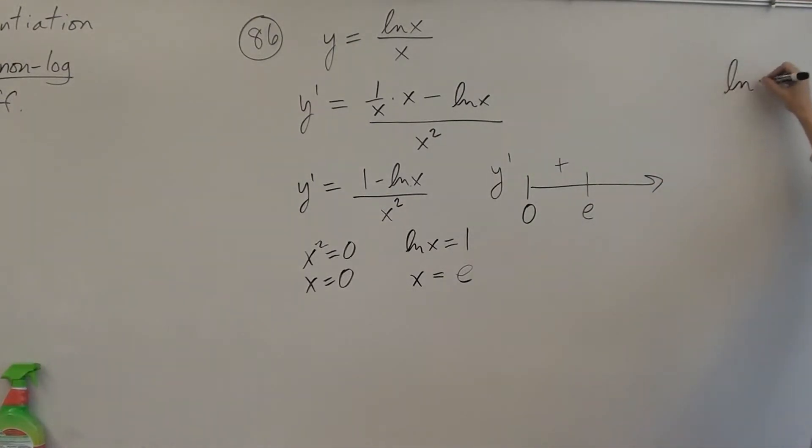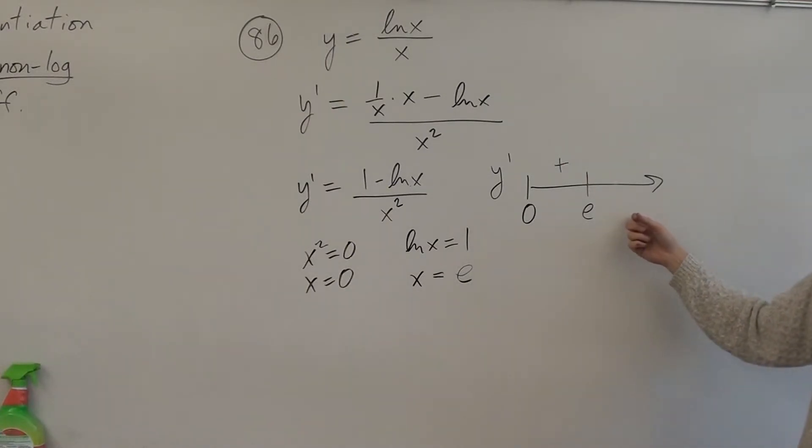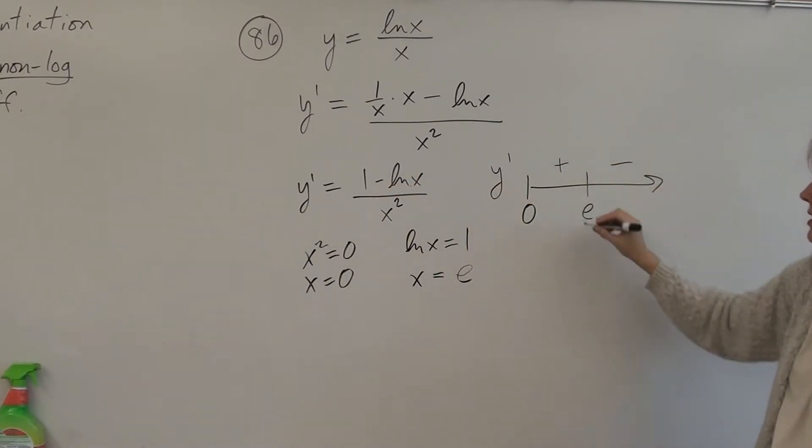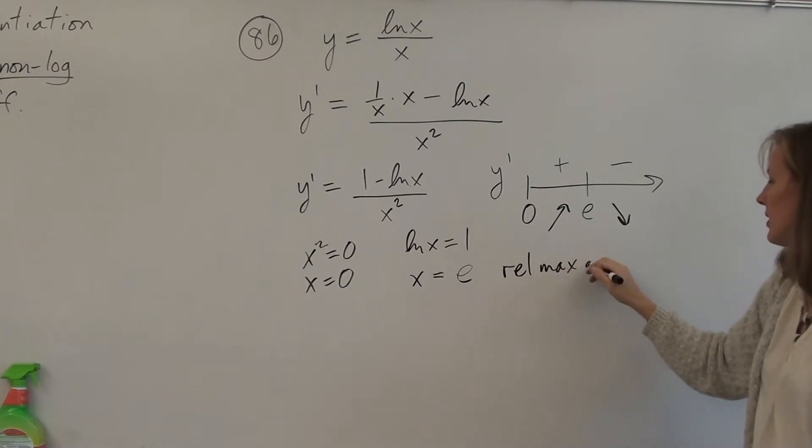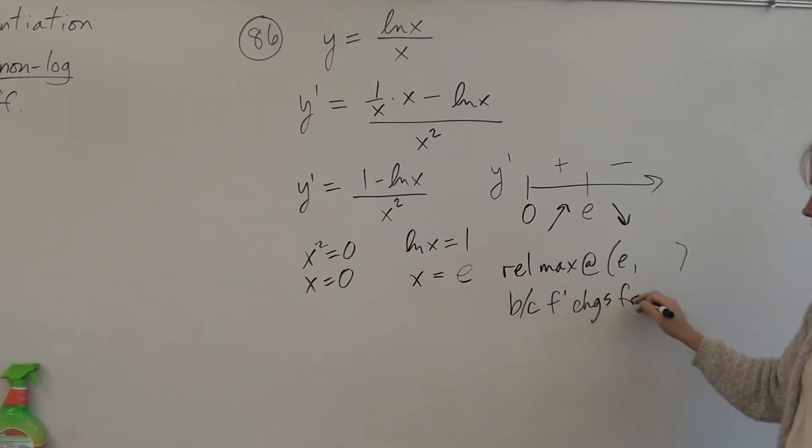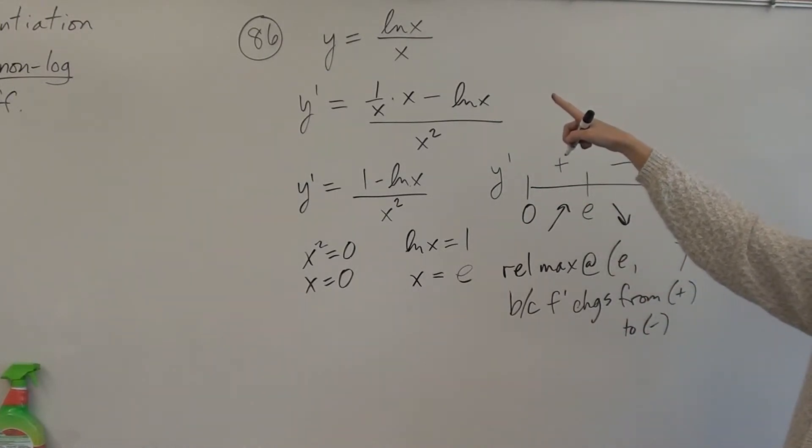Do you guys remember we talked about yesterday, like ln of e squared is 2, ln of e to the 3rd is 3, ln of e to the 0 is 0, right? Right. Okay. Because e to the 0 is e to the 0. Okay. All right. Here if I picked like e to the 5th, that would be 5. 1 minus 5 is negative. So this function is increasing, decreasing. And we have, they didn't ask for that, they just asked for relative extrema. So we have a rel max at e comma something. Because f prime changes from positive to negative. The y value, what's ln of e? 1. Right? So you get 1 over e. That's our y value. All right.